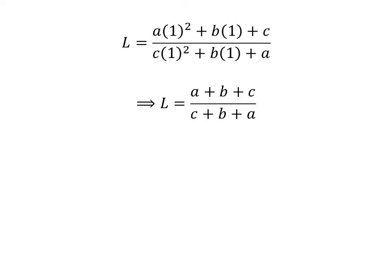Further simplification gives us the limit L = (a + b + c) upon (c + b + a). Cancelling out the common factor a + b + c in the numerator and denominator gives us the limit L = 1.